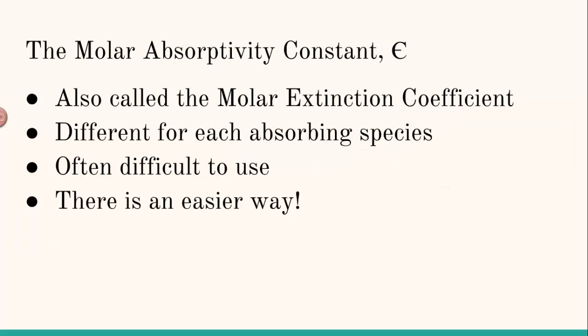Now this molar absorptivity constant, this epsilon value, is different for every absorbing species. So each substance, whether you're talking about copper 2 ions, which tend to have a bluish color, or iron 3 ions, which tend to be sort of a straw yellowish orange color,